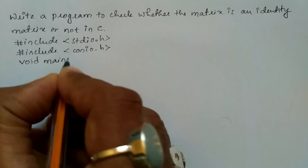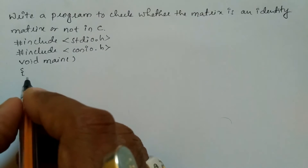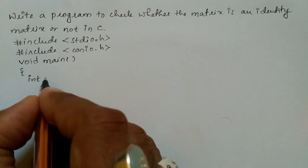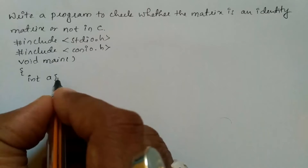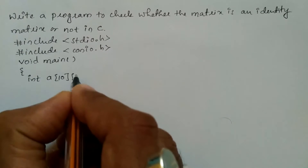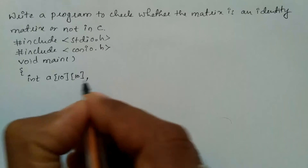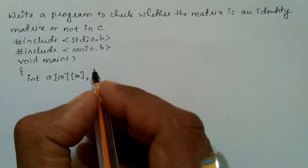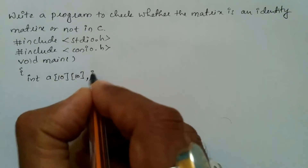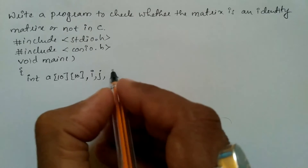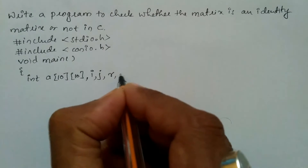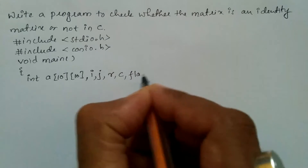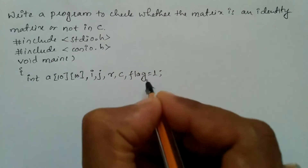We write the main function with curly open brace, and here I am going to declare int and a two-dimensional array of size 10 by 10, that is 10 rows and 10 columns. Now I am going to declare the indices i and j separated by comma, and I will take a row and column. Next I am going to take one more variable called flag, initialized to one.